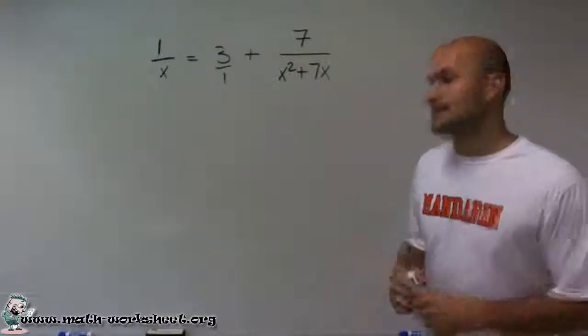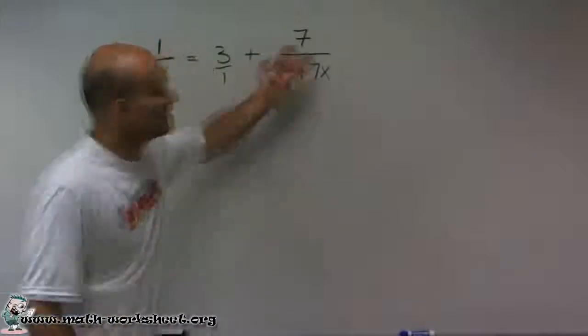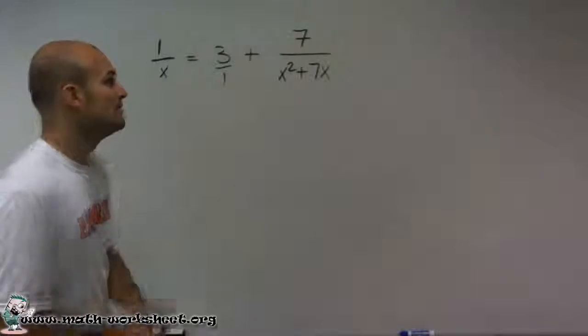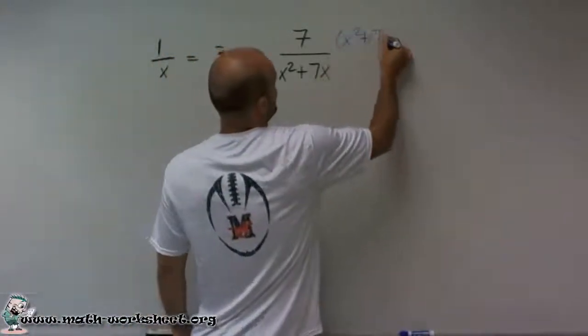So now once I know my least common denominator, to eliminate my denominators, I can multiply each one of my terms. And I've got to make sure I multiply every term by my least common denominator, which is x squared plus 7x.